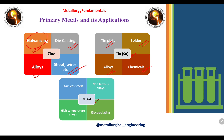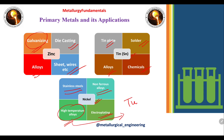Nickel is a very important primary metal used in high temperature applications — the most common being turbine blades. Nickel is also used in steels, stainless steels, non-ferrous alloys, and electroplating.